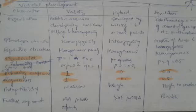Regression coefficient lete hain — regression coefficient kya hota hai, it is the functional relationship between the variables. Toh yeh variety mein hamesha 1 hota hai, hybrid mein 0.5 aur population mein 0.5.